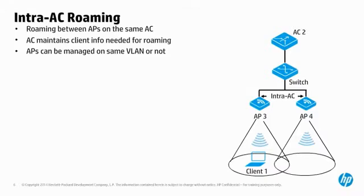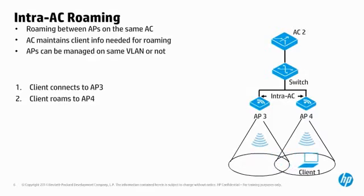During intra-AC roaming, the client initially associates with AP3, which is connected to AC2. The client walks down the hall, and as the signal from AP3 weakens and that for AP4 gets stronger, the endpoint WNIC makes the decision to de-associate from AP3 and associate to AP4. The AC proactively pushed the client information to AP4 so that when the client requests an association, AP4 does not force a new authentication. The client associates with a very fast handshake operation to complete an intra-AC roam association.